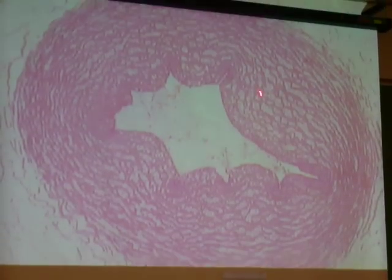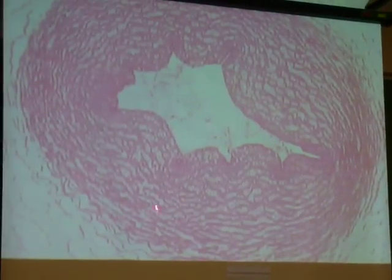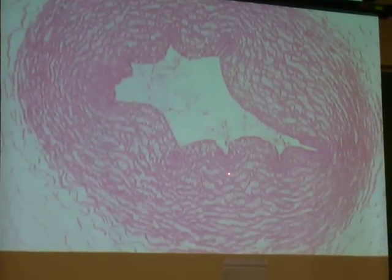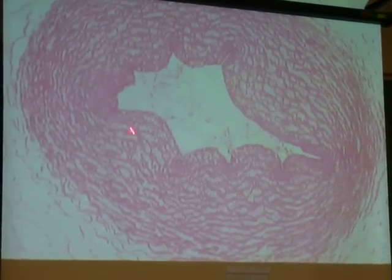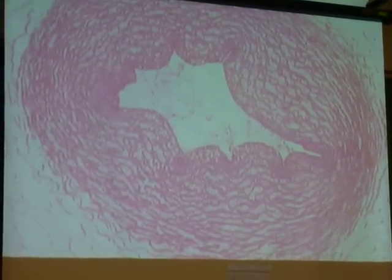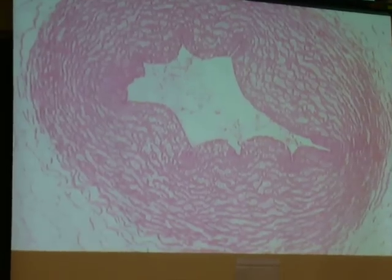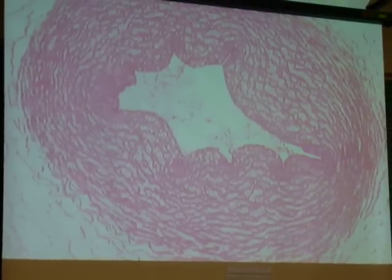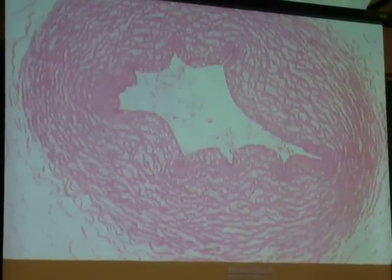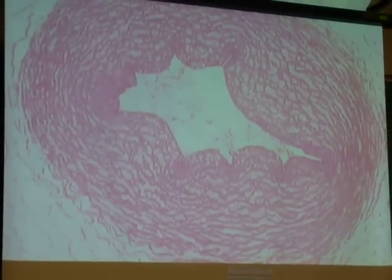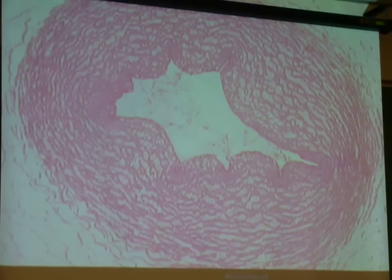Then we have a vein, this one here. So the vein here, that tunica media is not as dense, and this space is a little bit more open. So we have three large blood vessels, and a lot of your veins look even different than mine — more thin wall, which is easier to tell that it's a vein versus the artery.